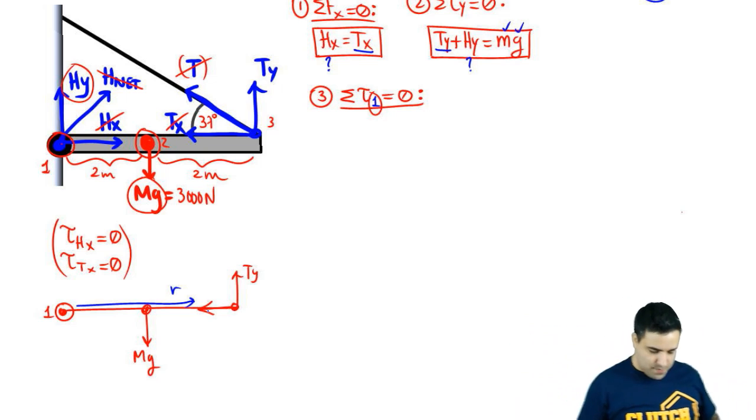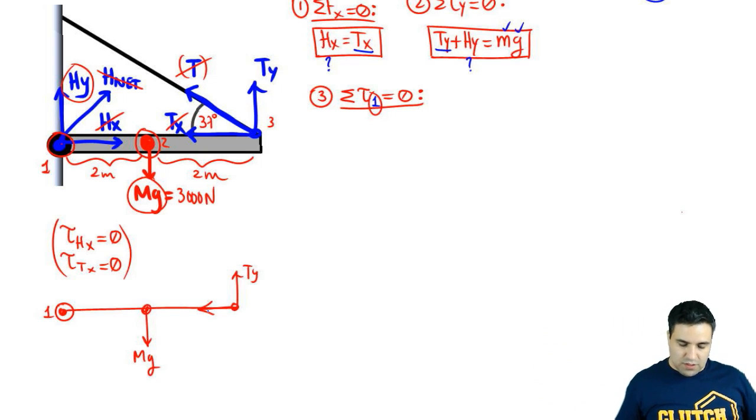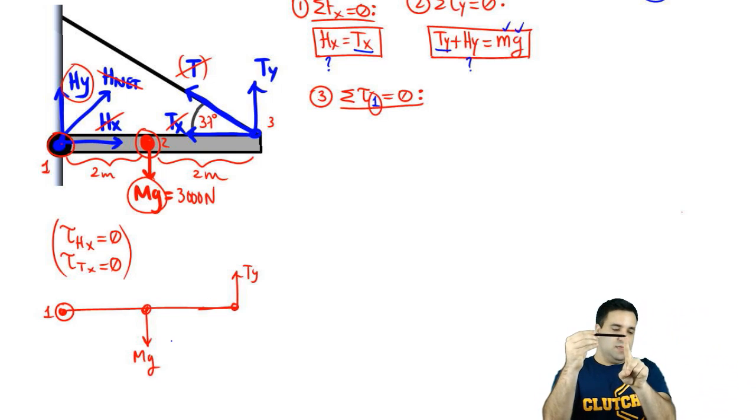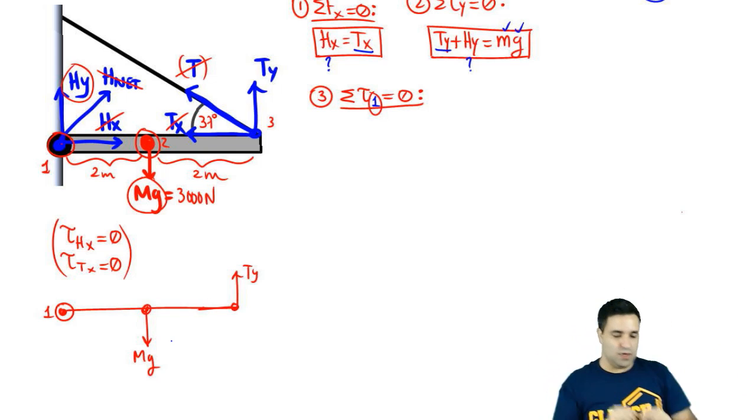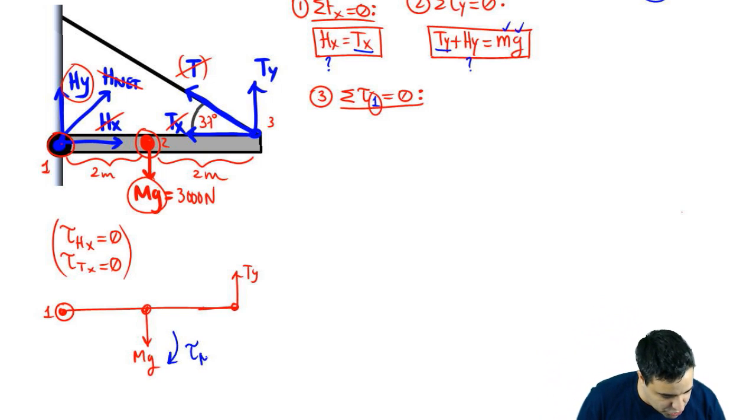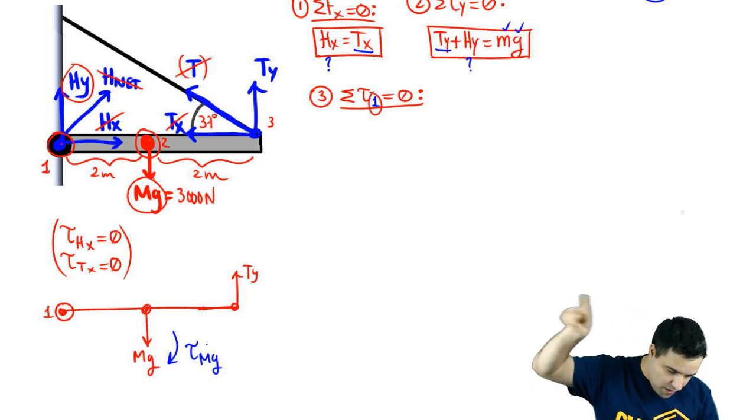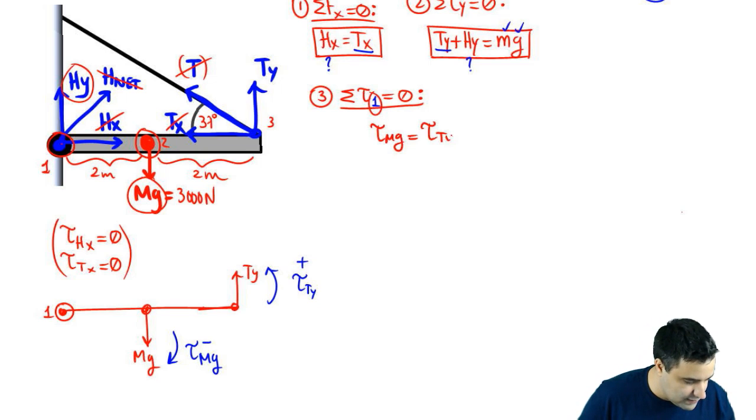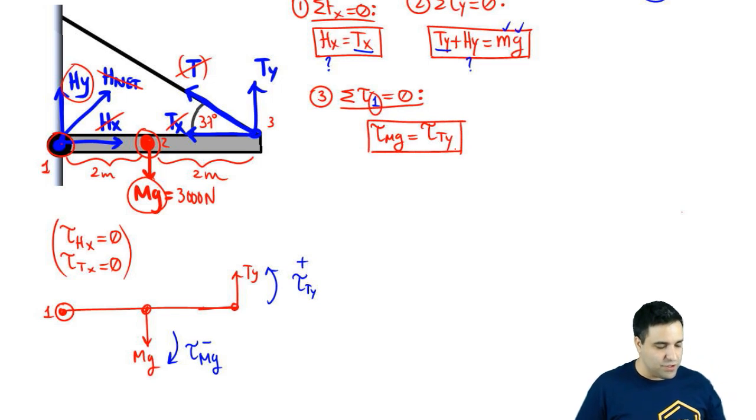So you're really left with just these two guys, which is awesome. So Mg is pushing down, so it does this. And Ty pushes up, so it does this. They go in opposite directions. The torque of Mg is clockwise negative. The torque of Ty is counter-clockwise positive. So I can write that torque Mg equals torque Ty. And I'm going to expand both sides of this equation. This is going to be Mg R sine of theta. And this is going to be Ty R sine of theta.